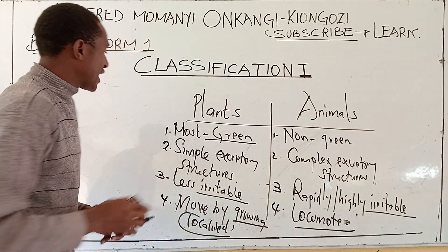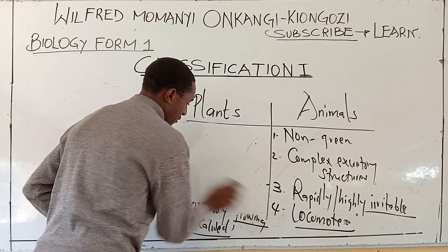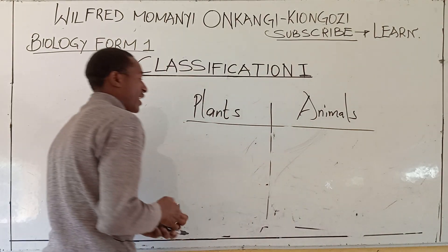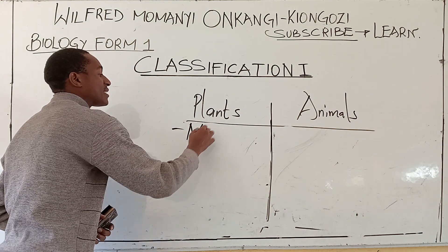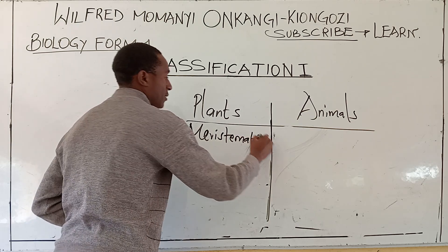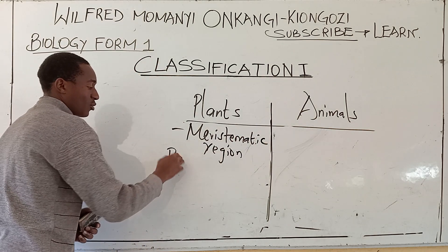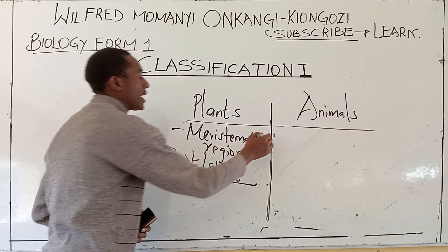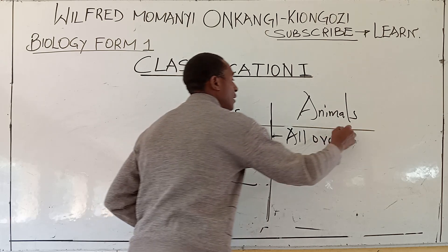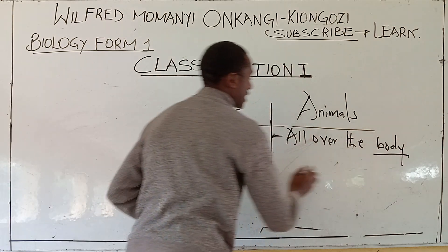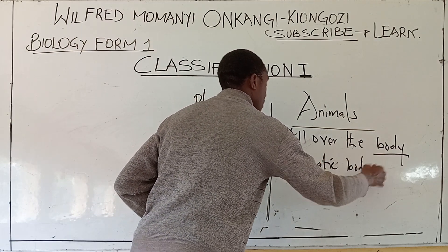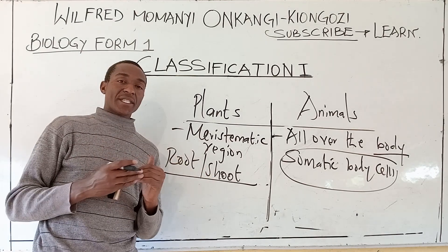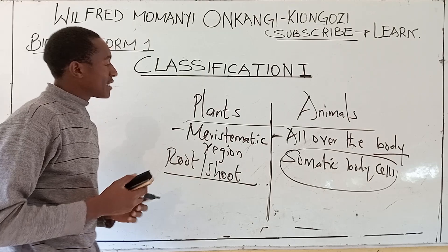We also gave reasons for locomotion. The last difference is growth: plants grow at meristematic regions — specifically the roots and the shoots — while in animals, growth occurs all over the body through somatic body cells. You will meet that terminology when we talk about growth and development in form four.